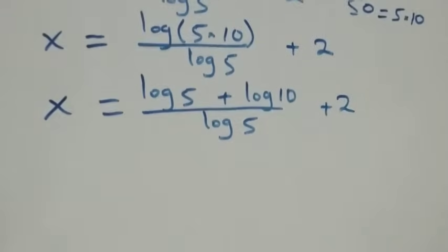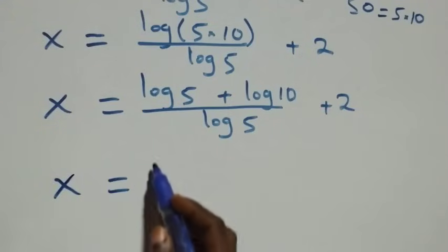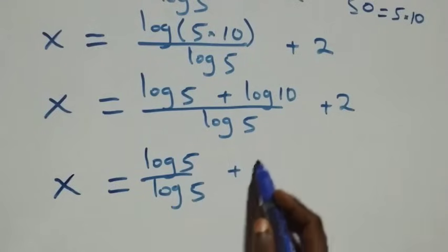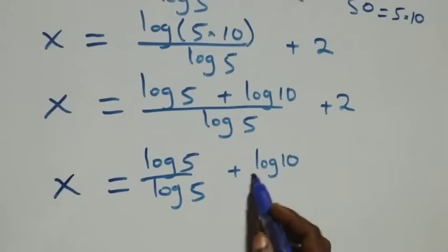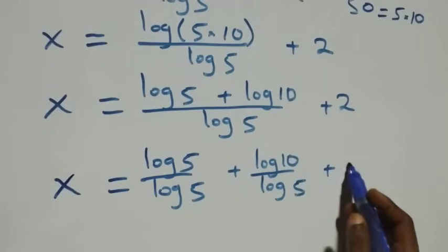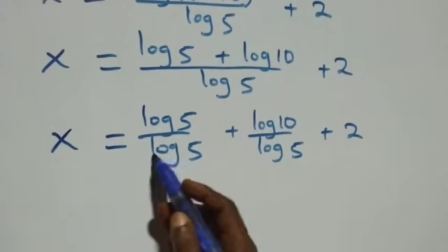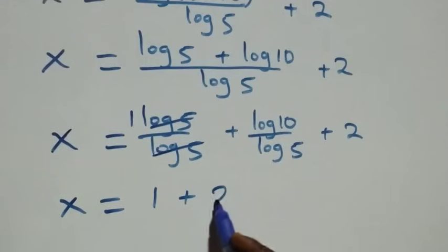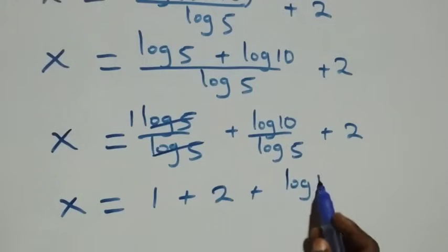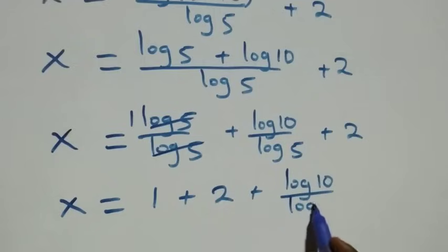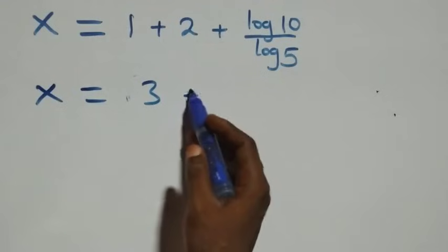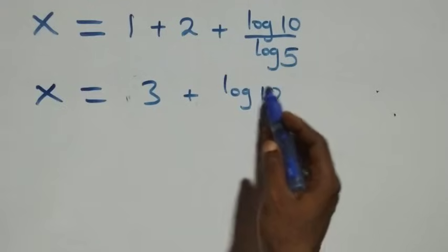We separate log 50 over log 5 into two fractions: x equals log 5 over log 5 plus log 10 over log 5 plus 2. Here, log 5 over log 5 cancels to give 1, which implies x equals 1 plus log 10 over log 5. That gives x equals 1 plus 2, which is 3, plus log 10 over log 5.